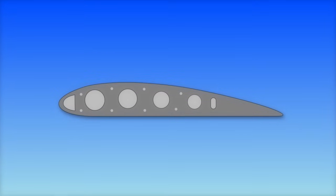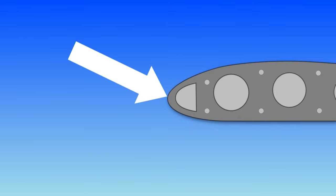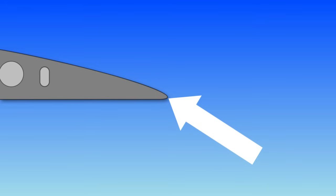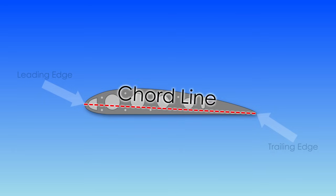Before we get too in-depth, let's introduce a few new terms. The forwardmost point of the wing is called the leading edge. The aftmost point is called the trailing edge. If we connect these two edges together with an imaginary line, this line is called the chord line.